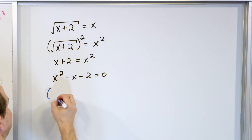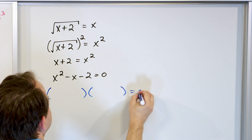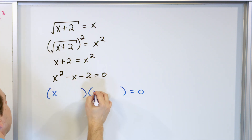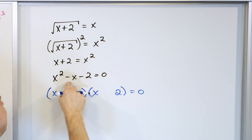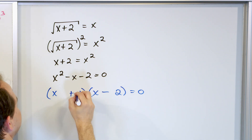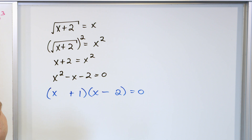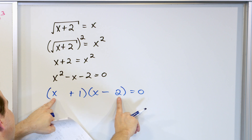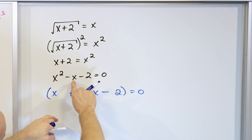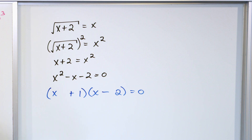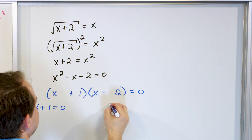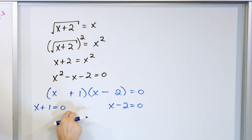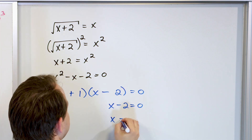Now I need to factor x squared minus x minus 2. I'll try: x times x gives x squared, and I need factors of 2 with the right signs. It works as (x + 1)(x − 2). Check: x times x is x squared; negative 2 times 1 gives negative 2; x times negative 2 gives negative 2x; negative 2 times x... adding the middle terms gives negative x. Setting each factor equal to zero: x plus 1 equals 0 gives x equals negative 1, and x minus 2 equals 0 gives x equals positive 2. I have two answers.